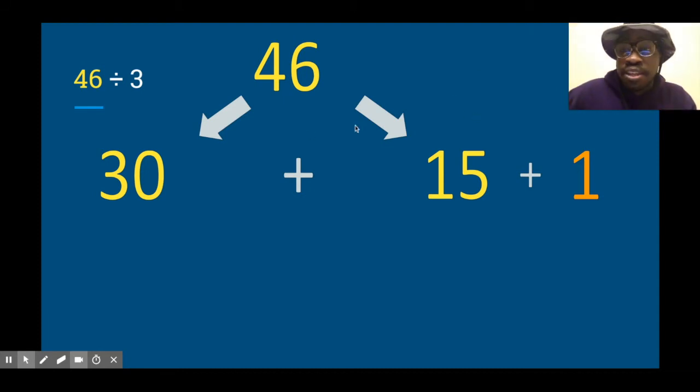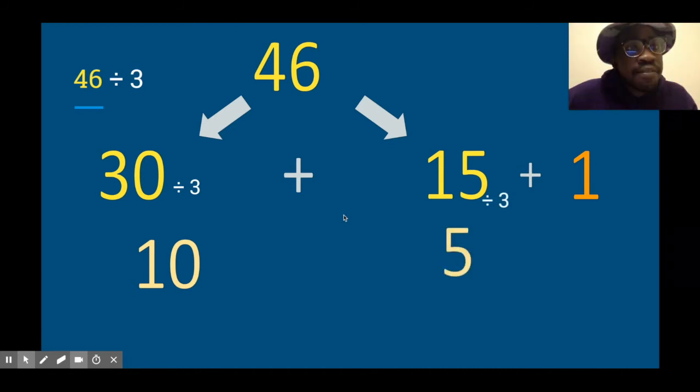For right now, let's work with the 30 and the 15. 30 divided by 3 is 10. 10 times 3 is 30. And then 15 divided by 3, that is 5.